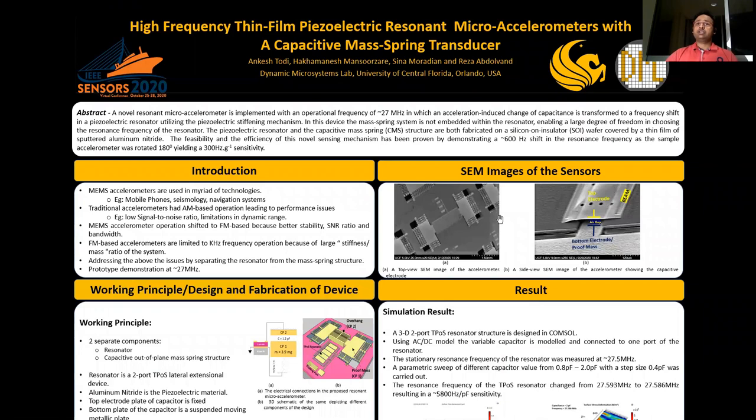In the SEM images, as you can see, the left one shows the top view of one of our sensors and the right one is a side view of the CMS structure which shows the top electrode, the bottom electrode, and the air gap.